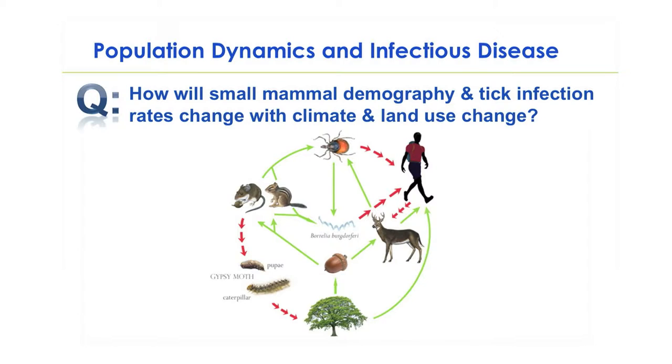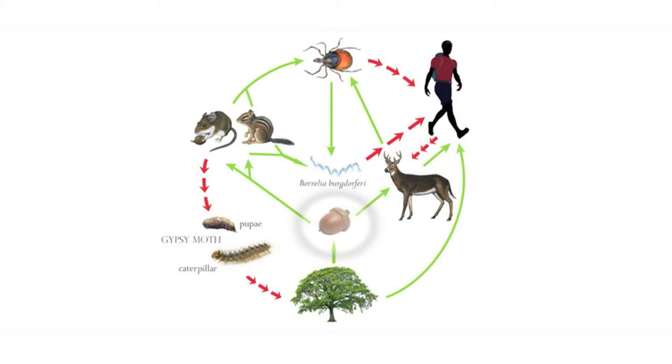First, how will small mammal demography and tick infection rates change with climate and land use? We know this is important because the population dynamics of small mammals, namely white-footed mice, have been shown to both impact and be impacted by acorn production in oak forests in the northeastern U.S., and that these dynamics have significant impacts on the infection rates in ticks with the bacterium that causes Lyme disease.